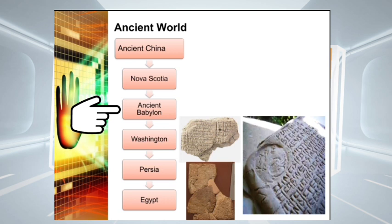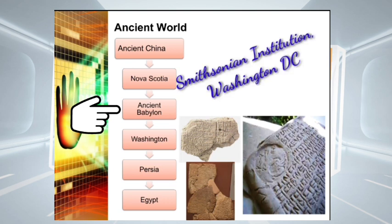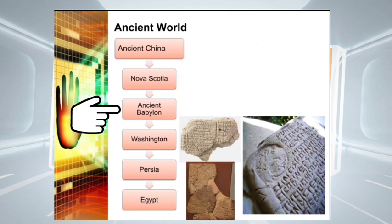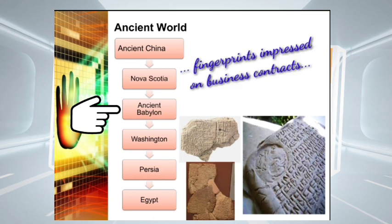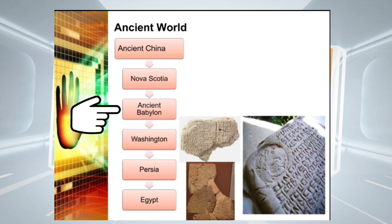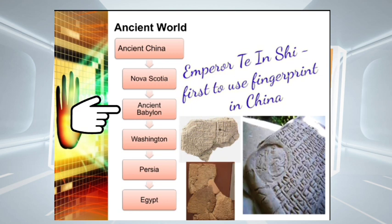Some of these seals can be seen in the Smithsonian Institution in Washington DC. The Chinese documents identified with the Tang dynasty refer to the fingerprint being impressed. It is conjectural as to what extent these earlier instances of fingerprinting were intended for actual identification of persons. However, history shows that Emperor Te Inshi was the first to use fingerprints in China.